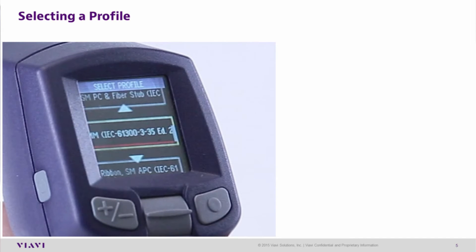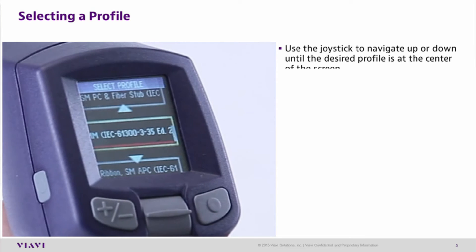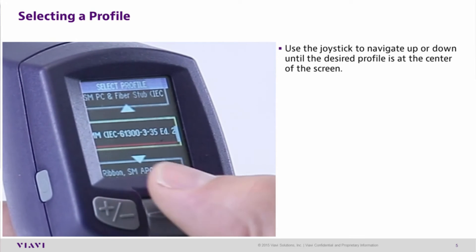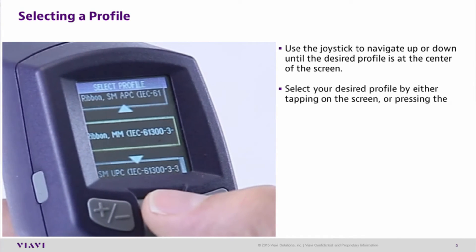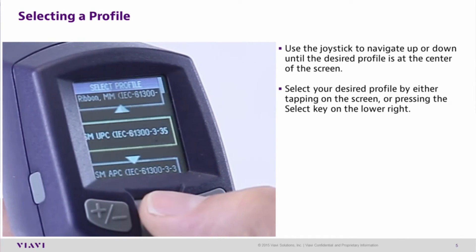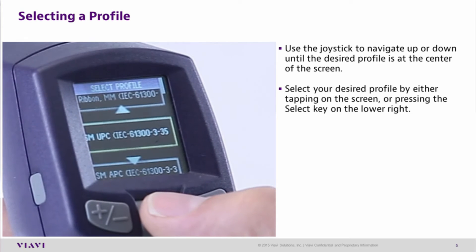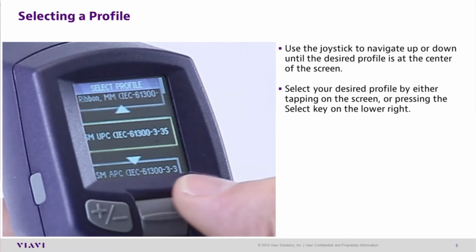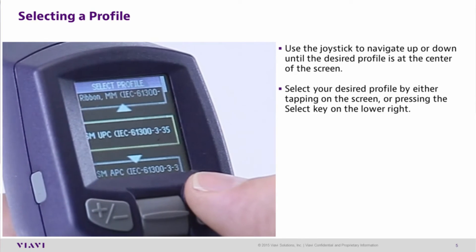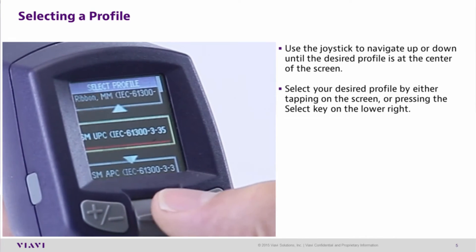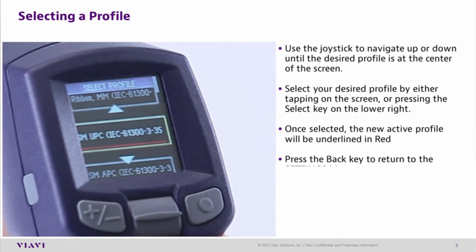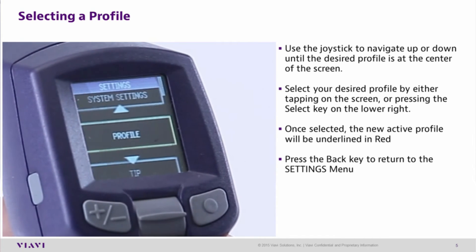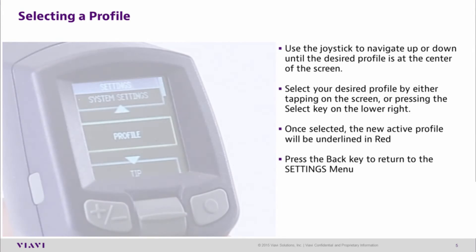Selecting a profile. Use the joystick to navigate until the desired profile is at the center of the screen. Select your desired profile by either tapping the screen or pressing the select button in the lower right. Once selected, the new profile will be underlined in red. Press the back key to return to the settings menu.